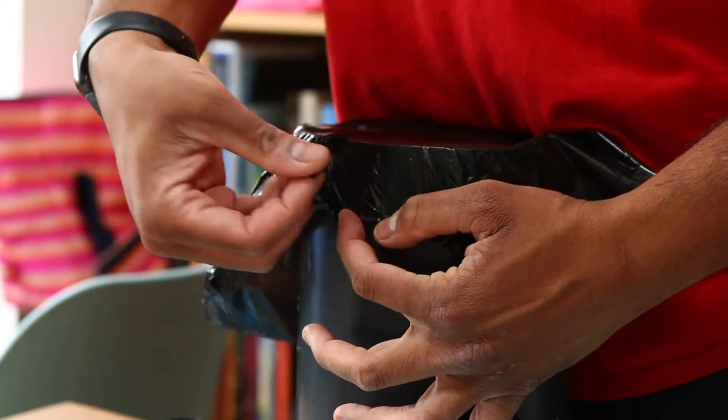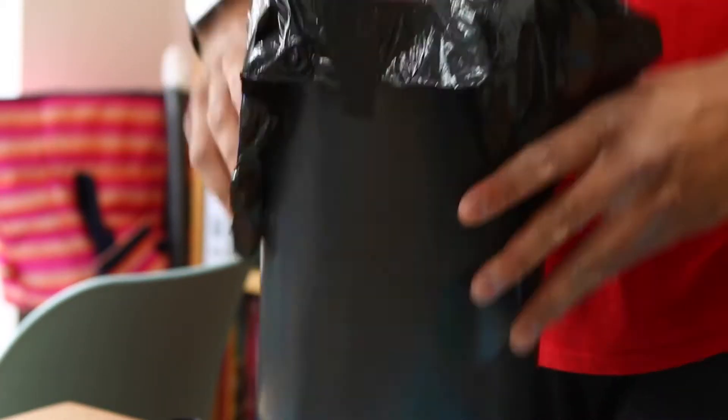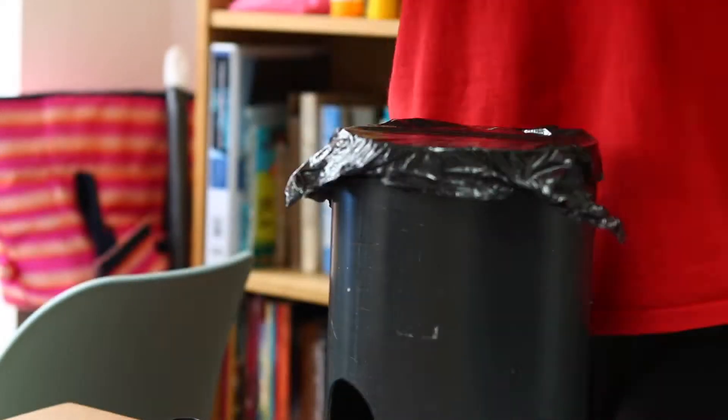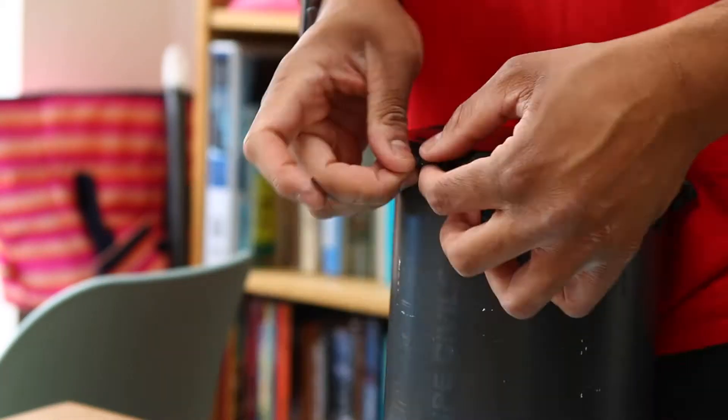Take the opposite end of the film that you first fastened, stretch this tight over and stick down. I do this all the way around the drum and then put another strip of tape all the way around just to be safe.